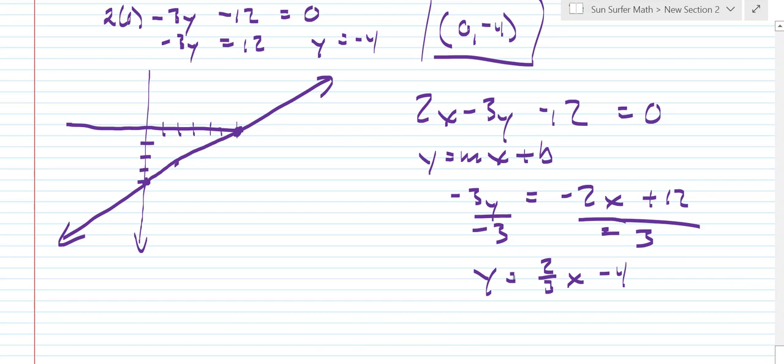We're going to have y is equal to 2 thirds x minus 4. Now, from the previous video, we know that the slope is 2 thirds. And the y intercept is negative 4. Or in other words, the point 0, negative 4.